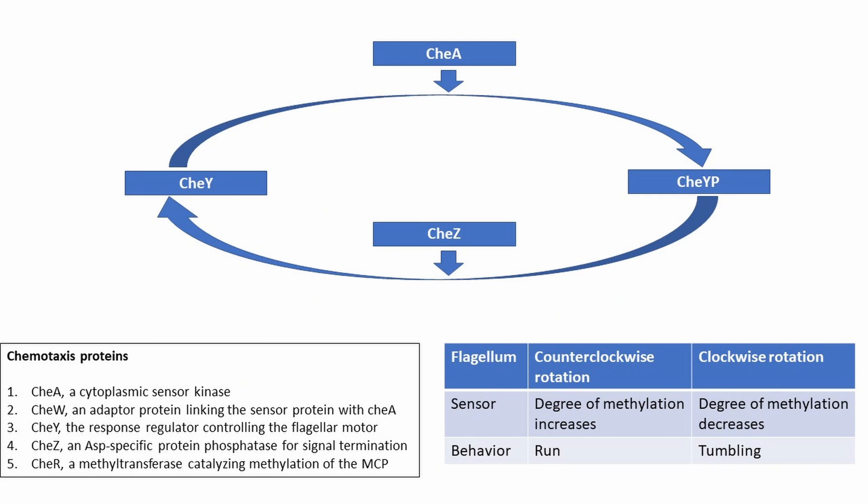The protein CheZ accelerates the dephosphorylation of CheY-phosphate, thereby inactivating it and stopping the tumble response. The binding of an attractant has the opposite effect: it inactivates the receptor and therefore decreases the phosphorylation of CheA and CheY, resulting in counterclockwise flagellar rotation and forward motion — the run. Each phosphorylated intermediate decays in about 10 seconds, enabling the bacterium to respond very quickly to changes in environmental factors.